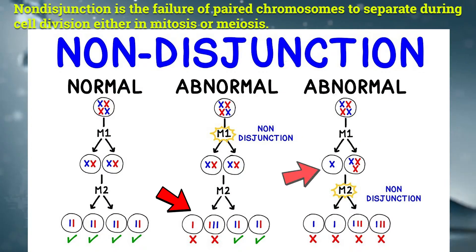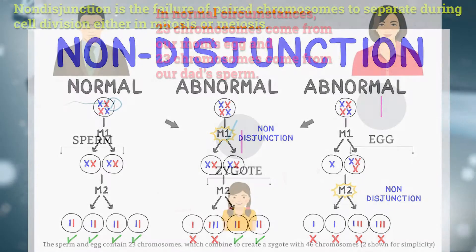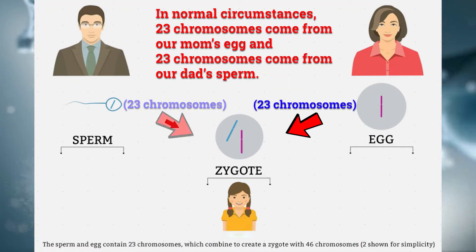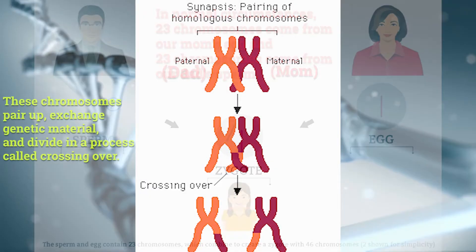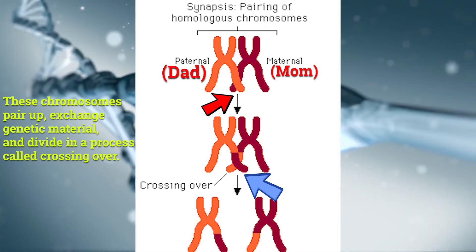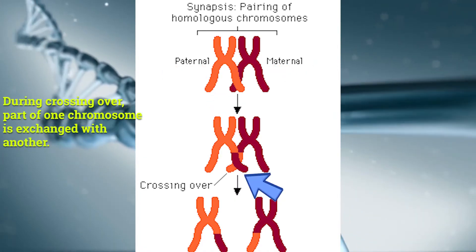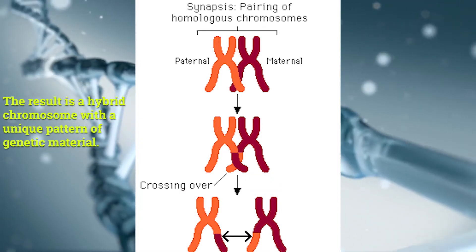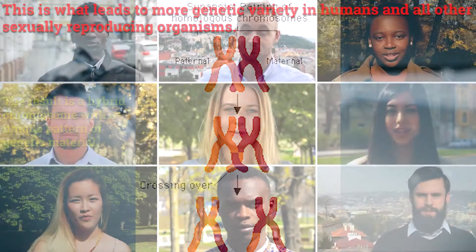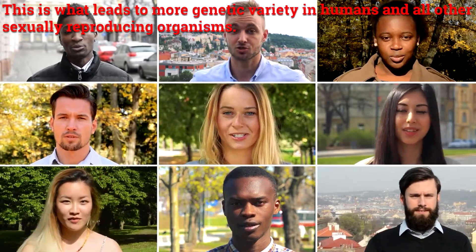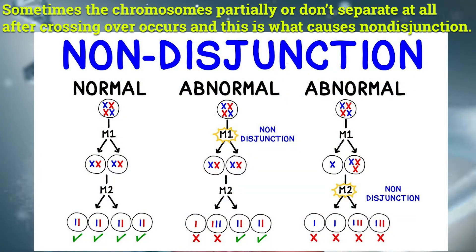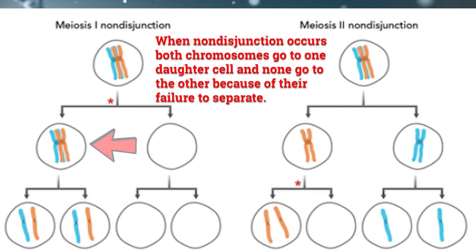Before we dive into chromosome mutations, let's talk about the cause of chromosome mutations, which is through non-disjunction. Non-disjunction is the failure of paired chromosomes to separate during cell division, either in mitosis or meiosis. In normal circumstances, 23 chromosomes come from my mom's egg and 23 chromosomes come from my dad's sperm. These chromosomes pair up, exchange genetic material, and divide in a process called crossing over. During crossing over, part of one chromosome is exchanged with another, resulting in a hybrid chromosome with a unique pattern of genetic material. This leads to more genetic variety in humans and all other sexually reproducing organisms. But sometimes, the chromosomes partially or don't separate at all after crossing over occurs, and this is what causes non-disjunction. When non-disjunction occurs, both chromosomes go to one daughter cell and none go to the other because of their failure to separate.